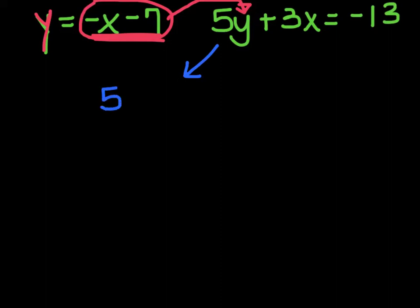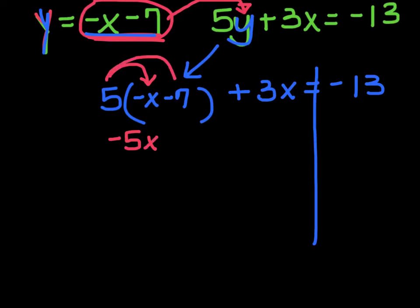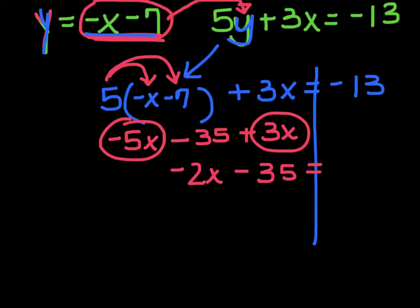I'm going to rewrite the equation, writing 5 times — and now I fill in what y is, which is negative x minus 7 — then rewrite the rest: plus 3x equals negative 13. Now I distribute: 5 times negative x gives me negative 5x, and 5 times negative 7 gives me minus 35, then plus 3x. Combining like terms, negative 5x and 3x gives negative 2x, so I have negative 2x minus 35 equals negative 13.